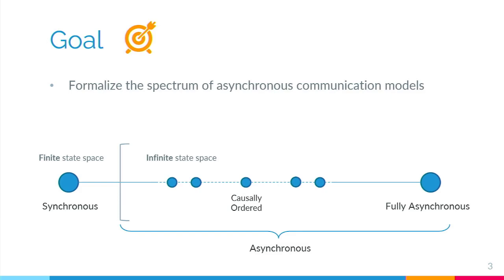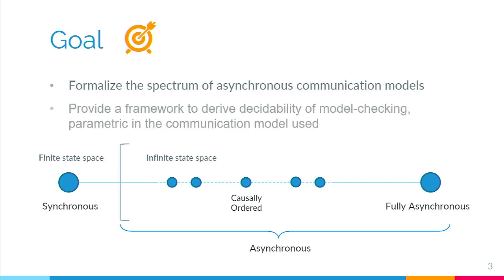Our goal was, first of all, to try and formalize all of this, because several asynchronous communication models have been introduced in the literature, but it often wasn't clear what the differences were between some of them. They seemed very similar but had small differences. So first we wanted to formalize the spectrum of asynchronous communication. After doing that, we also provided a framework — a set of techniques you can use to derive the decidability of the model checking problem by taking into consideration the communication model used by the distributed system.